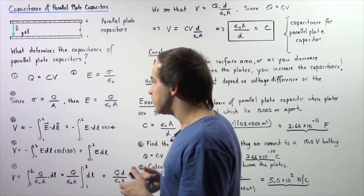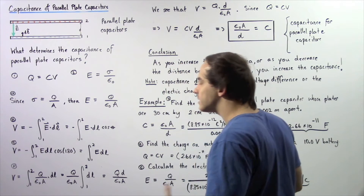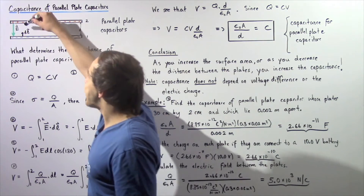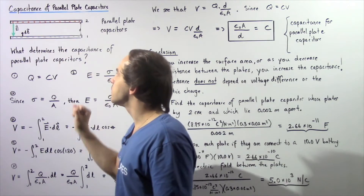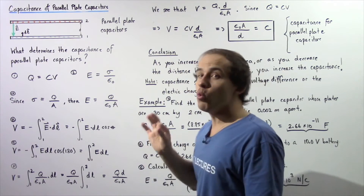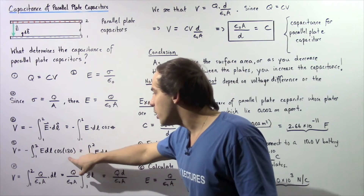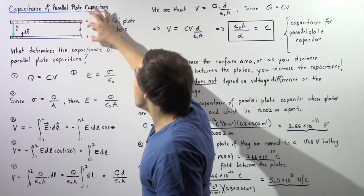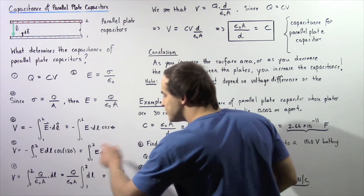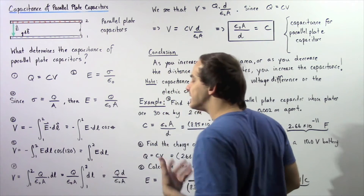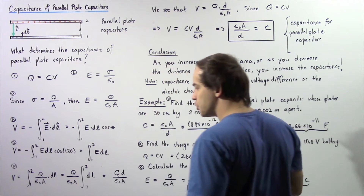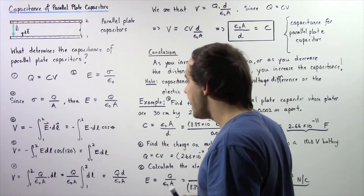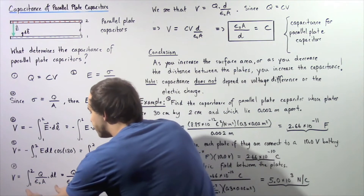By definition of the dot product, the dot product of two vectors equals the product of their magnitudes and the cosine of the angle between them. Our electric field vector points downward while our dl vector points upward, so the angle between them is 180 degrees. Since cosine of 180 degrees equals negative one, the voltage difference from plate one to plate two equals the integral of the magnitude of E multiplied by the magnitude of dl.